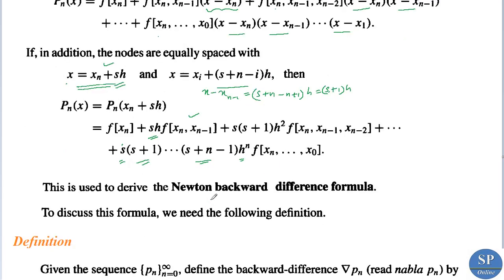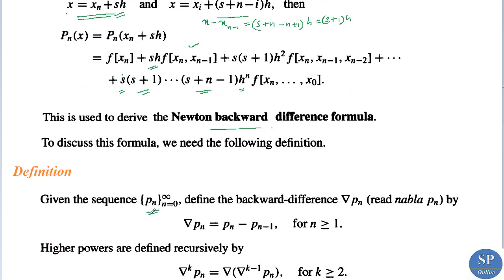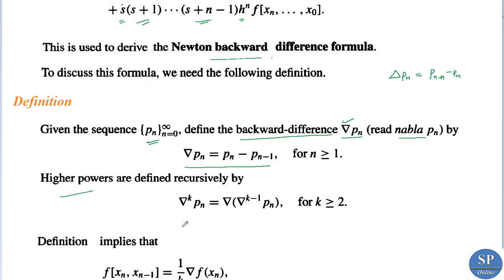To derive Newton's backward difference formula, we define the backward difference operator. Given a sequence p_n, the backward difference operator del (nabla) is defined as del p_n = p_n minus p_{n-1}, for n ≥ 1. This contrasts with the forward difference operator delta p_n = p_{n+1} minus p_n. Higher powers are defined recursively: del^k p_n = del(del^{k-1} p_n) for k ≥ 2. For example, del² p_n = del(del p_n).